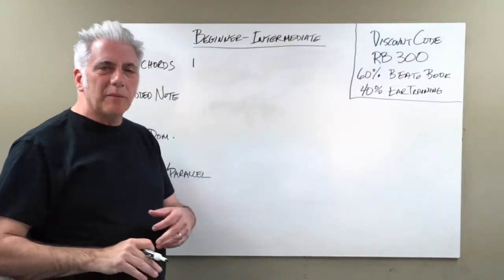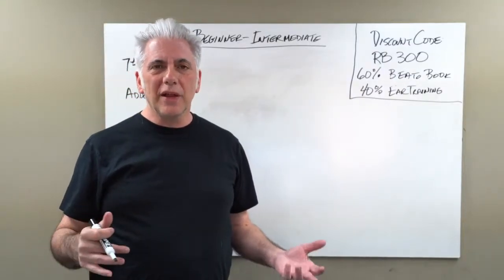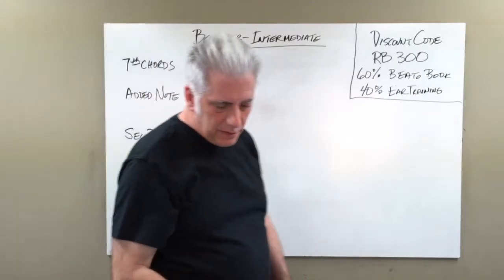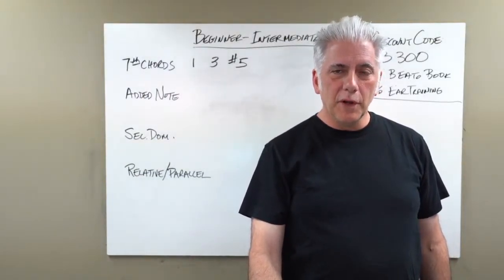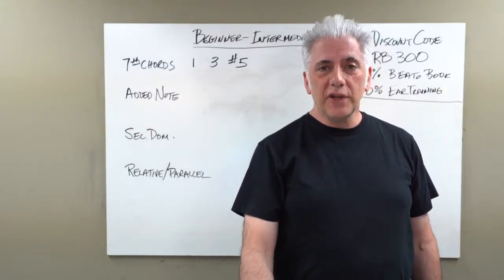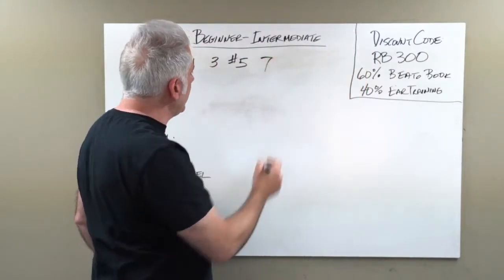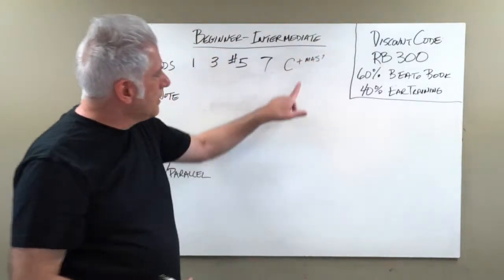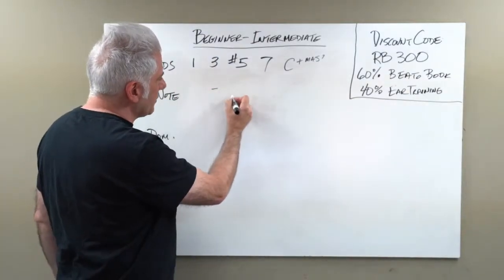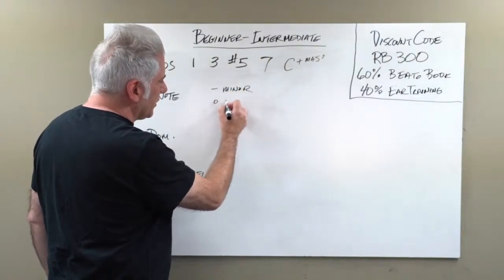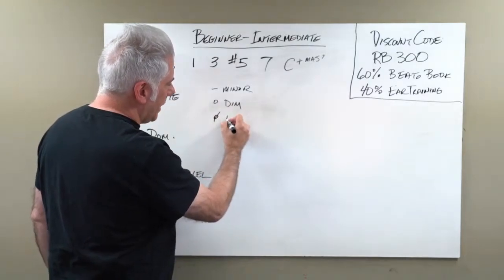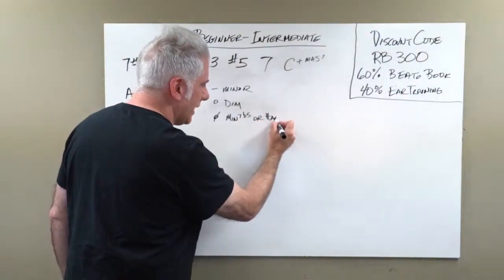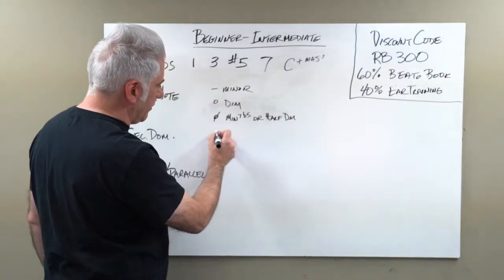You can augment chords by raising the fifth. Anytime something is augmented, it has a sharp 5. So 1-3-sharp 5 is an augmented triad. In C: take C major, take the fifth of the chord 1-3-5, raise it up a half step, and you get C augmented. You can put a 7th on there - C augmented major 7, written as C+ major 7. The plus sign equals augmented.